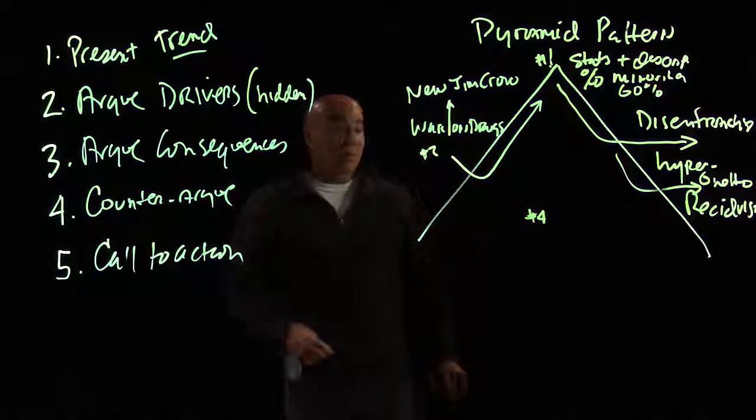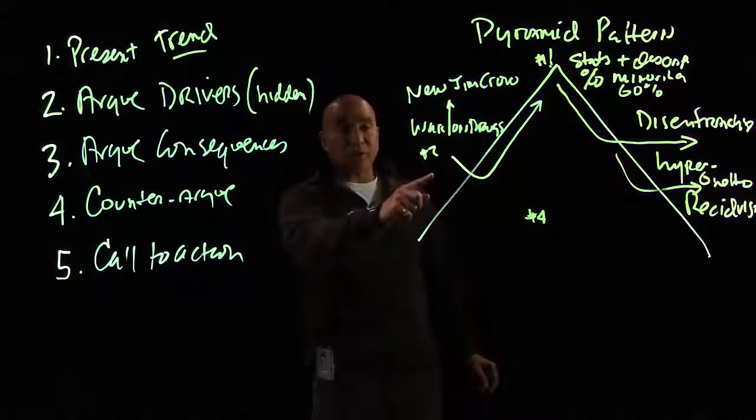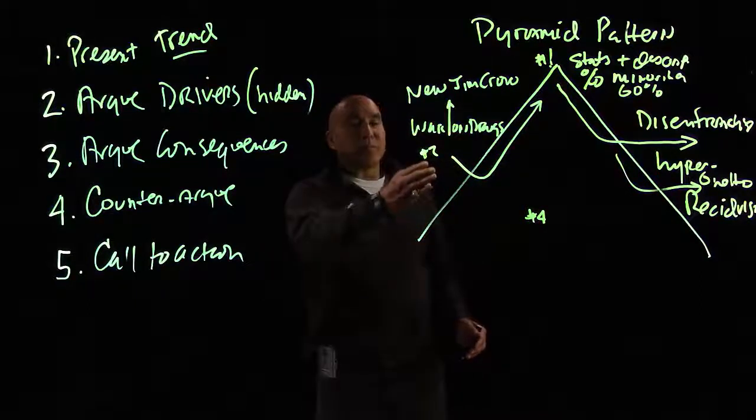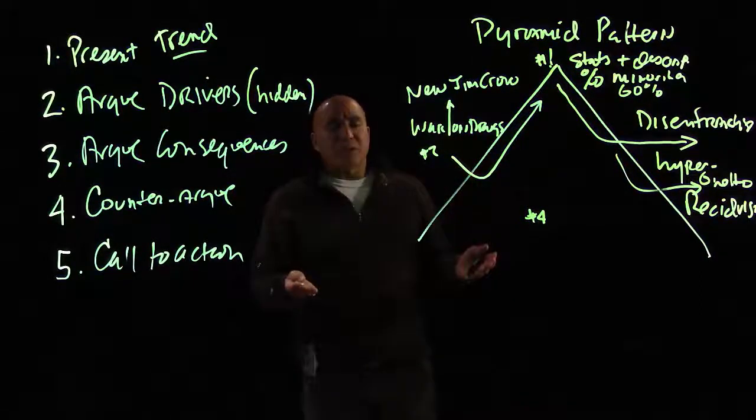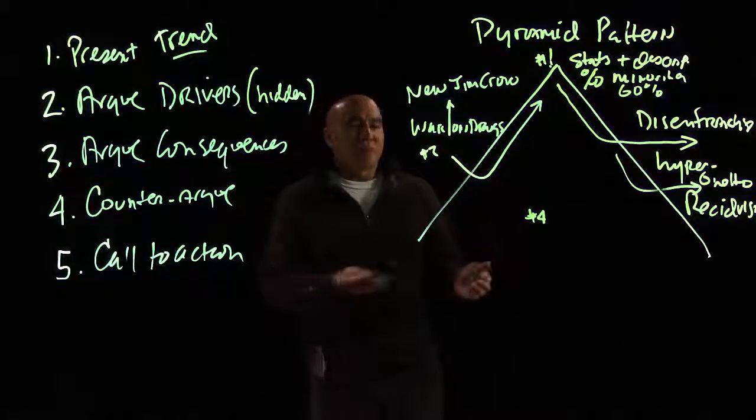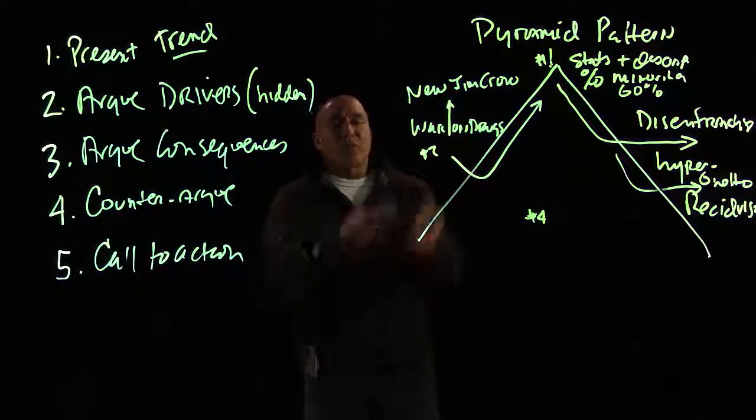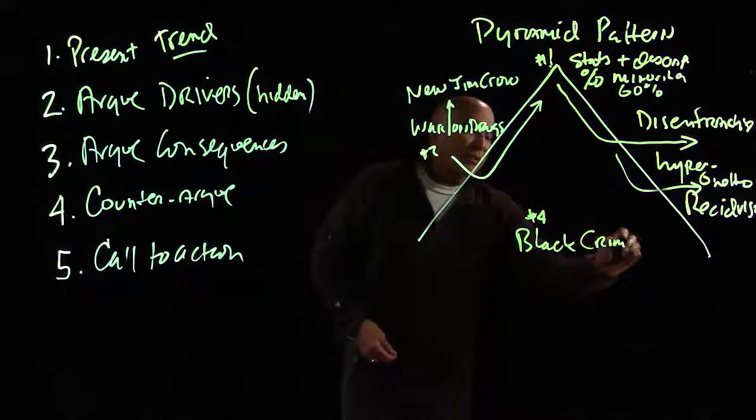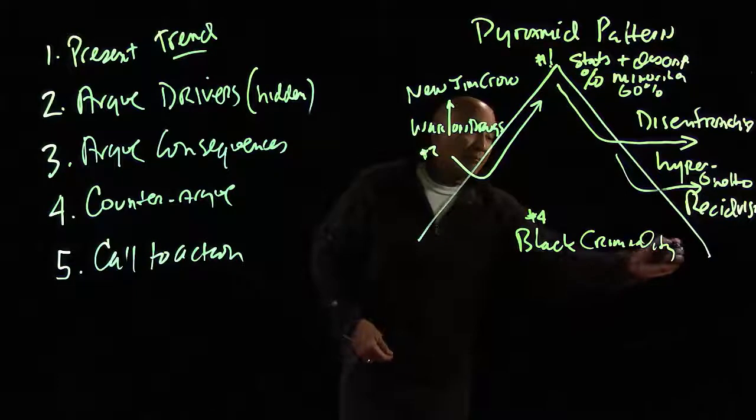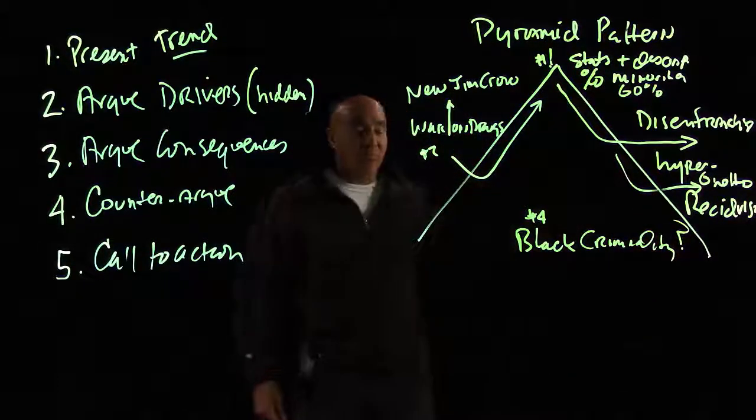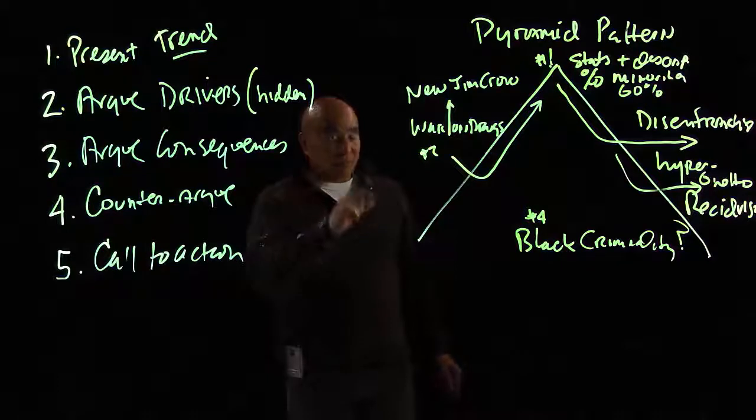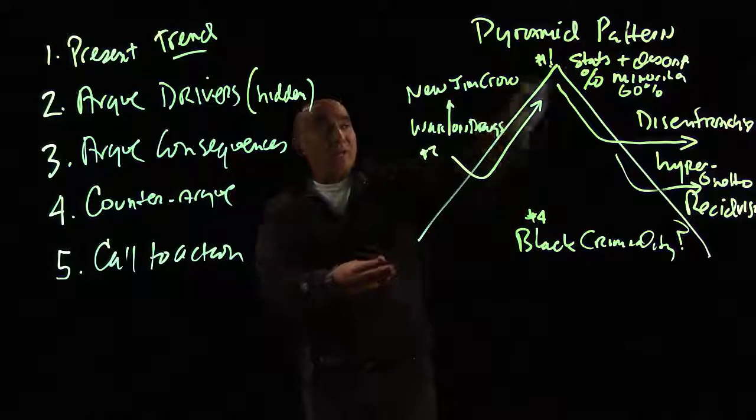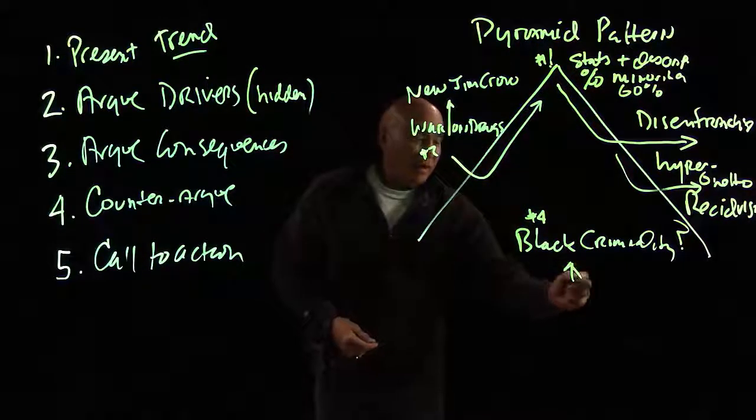I'll wrap it up with the last two. Number four, I take an alternative driver or alternative effect. I present that and then I counter it. Typical one would be, well, they did the crime, what's the big deal? Or blacks and Latinos are more prone to criminality. So maybe the explanation would be black criminality. You notice I put a question mark there. So I do that for my subheadings. Now I present this. I find a source that makes this claim to account for the high percentage minorities. And then I counter it.